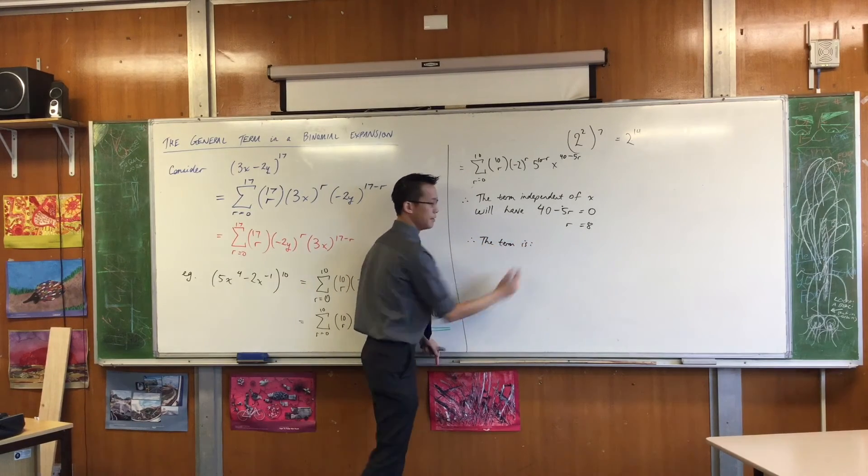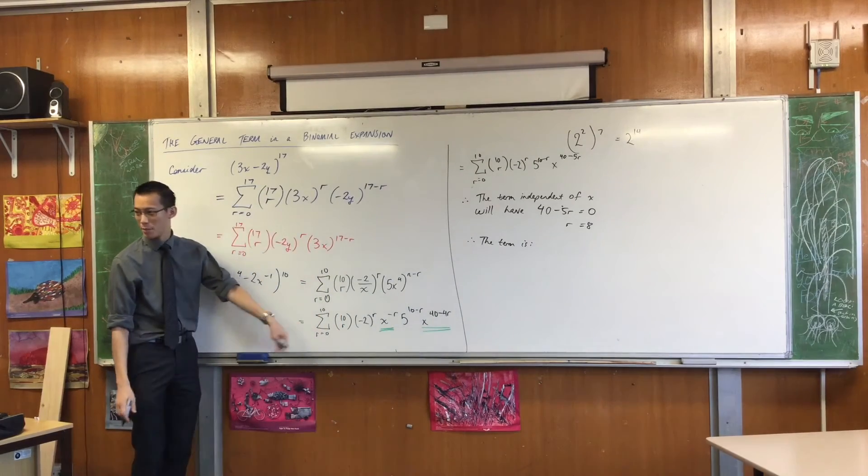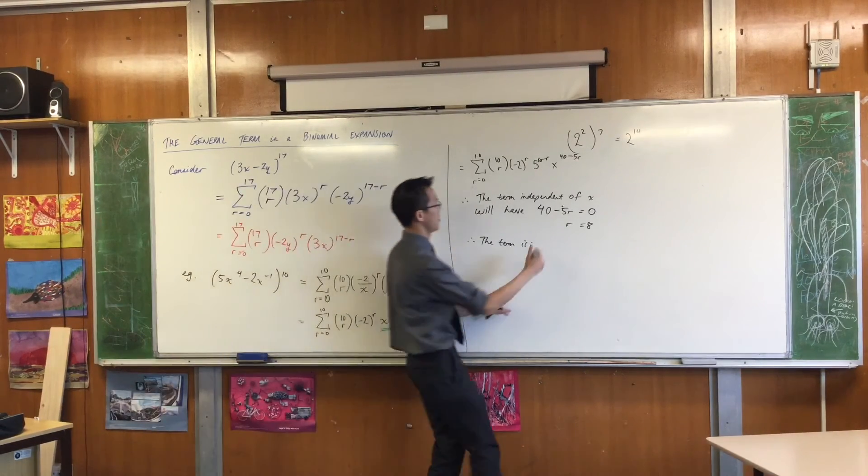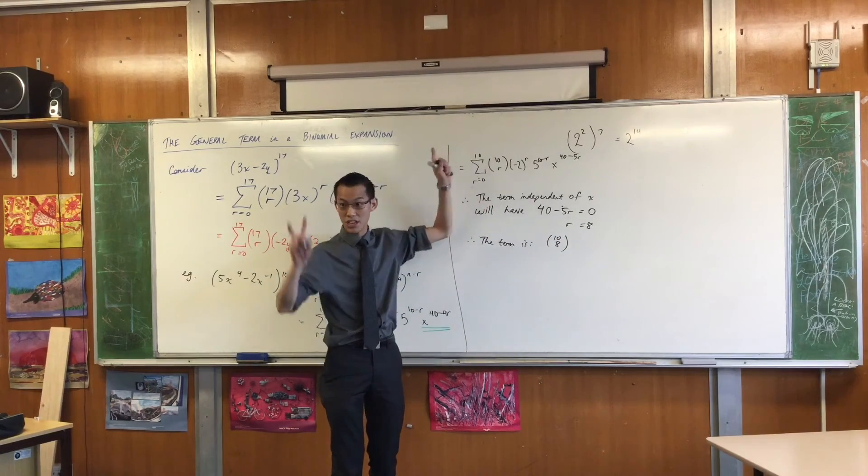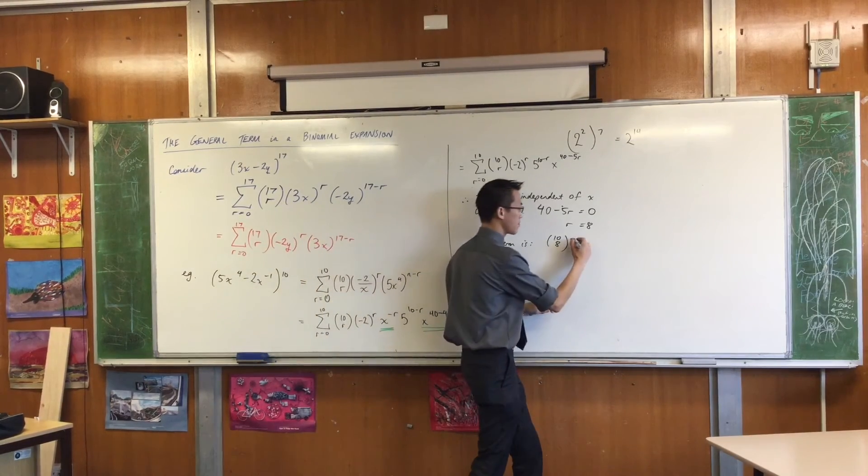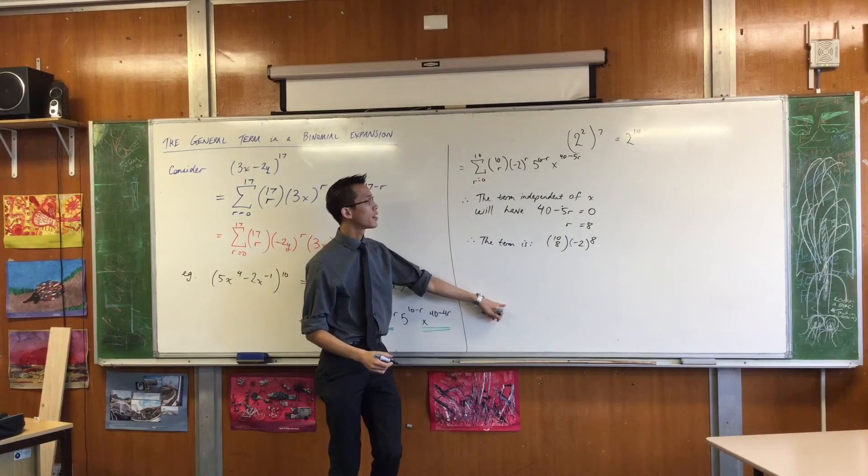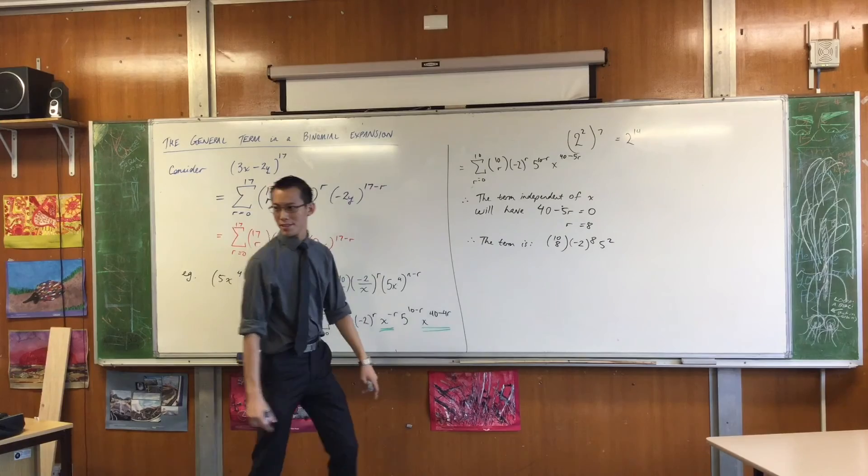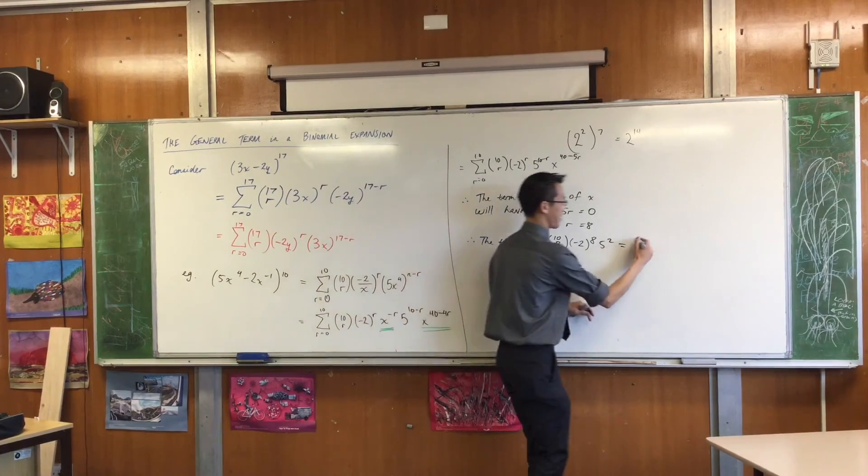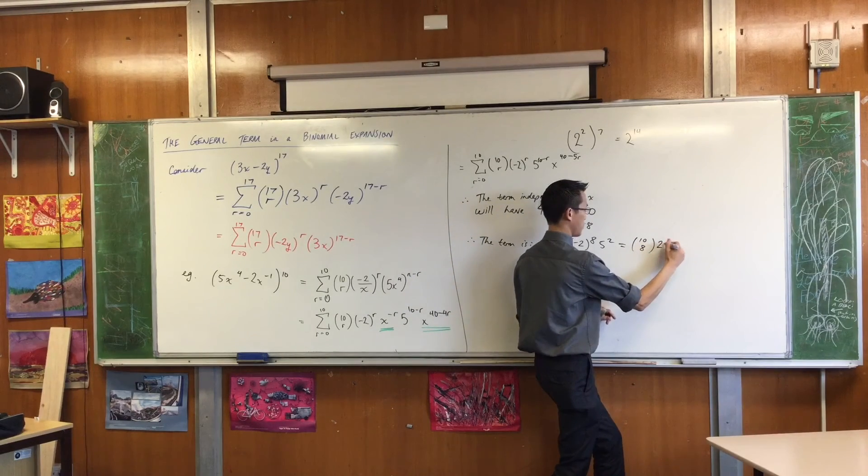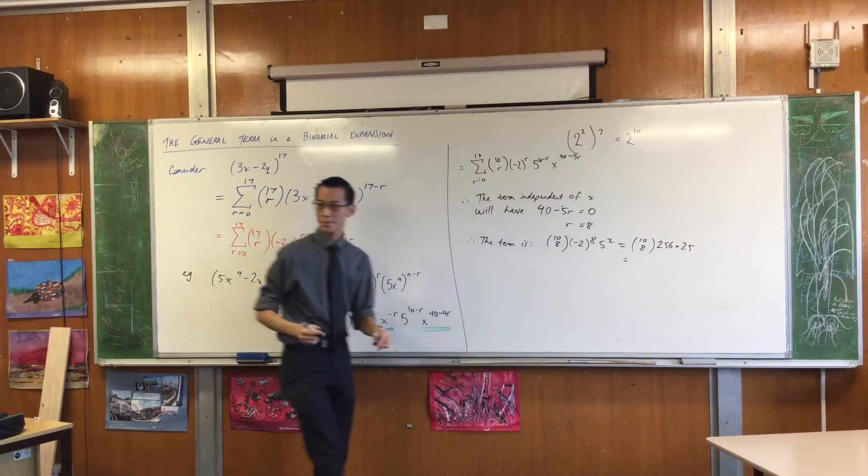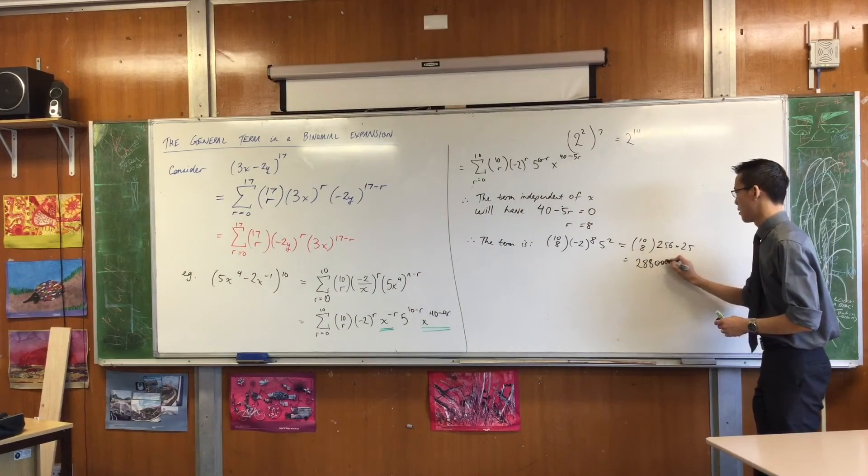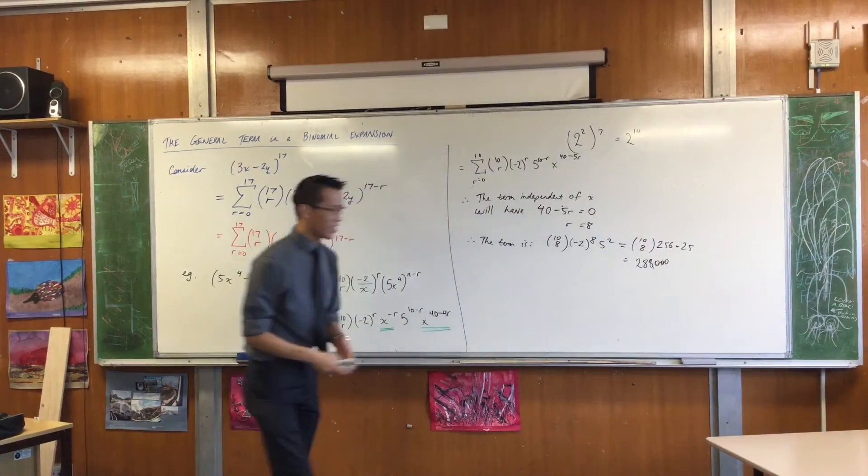Therefore, the term is, now because I'm now saying the term, I didn't have to write sigma. Sigma means out of all of them, right? Because this thing really does have 11 terms in it. But now I'm just going to the 8th term. So I'm going to say it's 10c8 times negative 2 to the 8th times 5 to the 10 minus 8, which is 2. I have no idea what this is. Can someone tell me what it equals to? That's 256 times 25. Someone work it out for me. 288,000. The whole thing? Can I get some confirmation? Thumbs up? Okay.